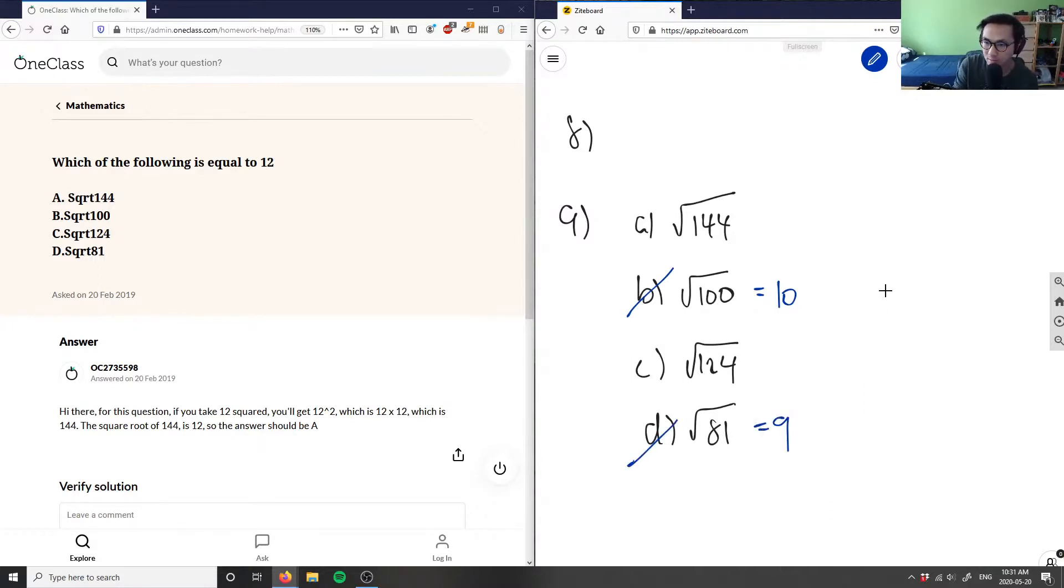And the reason why I know this is because 10 squared equals 100, so therefore the square root of 100 is going to equal 10. And 9 squared equals 81, so therefore the square root of 81 will equal 9. So I know these guys right off the bat. So I can say B and C are wrong. So it's between A and C here.